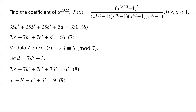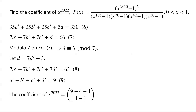The coefficient of X to the power of 2022 in P of X equals the number of non-negative integer solutions of equation 9. Equation 9 is the sum of 4 non-negative integer variables equaling 9. By stars and bars, the number of solutions equals 9 plus 4 minus 1 choose 4 minus 1, which is 12 choose 3. Therefore the coefficient of X to the power of 2022 in P of X equals 12 choose 3, which equals 12 factorial over 3 factorial times 9 factorial, which equals 12 times 11 times 10 over 6, which equals 2 times 11 times 10, giving the answer 220.